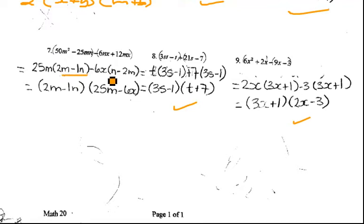When you pull this out, notice that these look like they're the same, but they're not. What we have to do is rearrange them. If we switch these two around, we would have 50m squared minus 25mn plus 12mx minus 6nx.